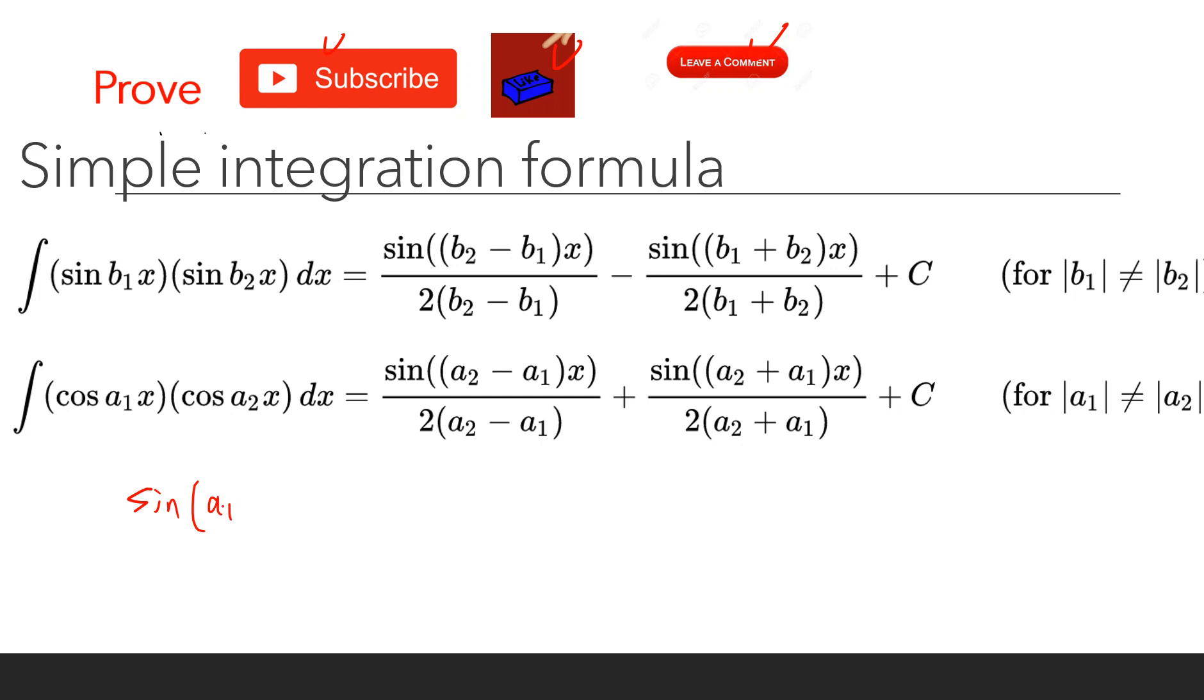We know that sin(a1x + a2x) is sin(a1x)cos(a2x) plus sin(a2x)cos(a1x). And also sin(a1x - a2x) is sin(a1x)cos(a2x) minus sin(a2x)cos(a1x).